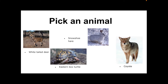The first thing you will do after watching this video will be to pick an animal from Michigan. You have four choices for this assignment — only four. You must pick one of these: you can pick a white-tailed deer, an eastern box turtle, a snowshoe hare, or a coyote. For this example, I am going to be using a brown bat found in Michigan. A bat is not one of your choices — it's just for my example.